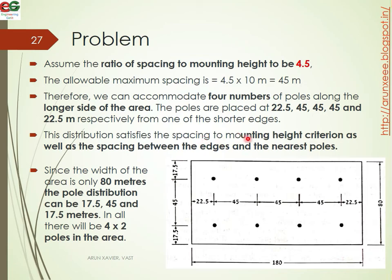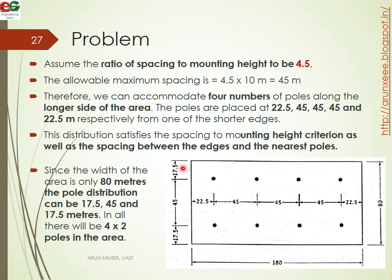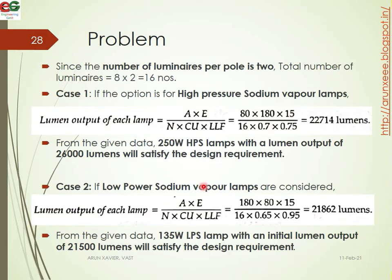This distribution will satisfy the spacing-to-mounting-height criteria as well as the spacing between the edges and the nearest pole. We split the width and length accordingly. The number of poles is equal to 8, and since we need 2 lamps per pole, the total number of luminaires is 8 times 2, which equals 16.